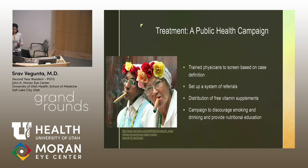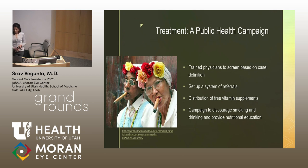All these studies were very helpful in coming up with a case definition and led to training of physicians to screen based on it — training of ophthalmologists, family physicians, and internists to help with screening and set up a referral system between primary care and ophthalmologists in rural and urban areas. The studies led to greater understanding of how vitamins could improve neuropathy. Three vitamin supplements were made available to the affected population and then to the entire population. The most severely affected patients were hospitalized and given intravenous B vitamins, and the rest received oral vitamins. A public health campaign was started to discourage smoking and provide nutritional education.